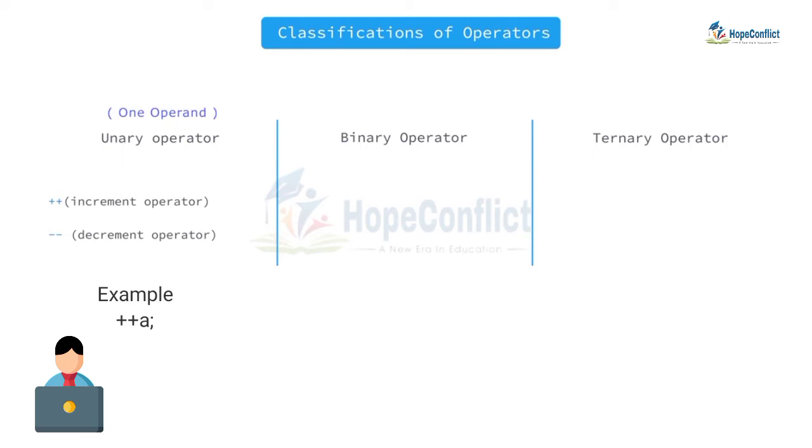Next we have binary operators, and here we need two operands. Examples are plus, minus, into, mode, etc. a plus b is an example for that. You have two operands a and b and one operator which is plus.